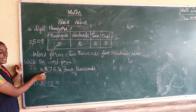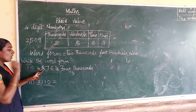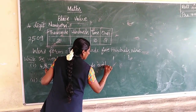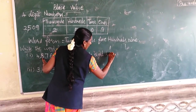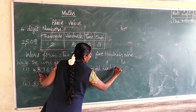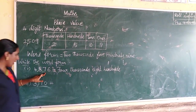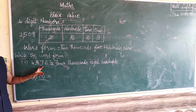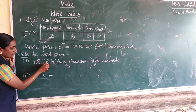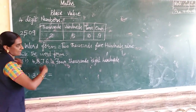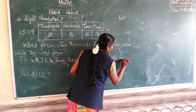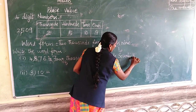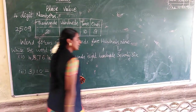Next, the 100s place. How many 100s? 8, so that is 800. Next, the 10s place: how many 10s? 7, so 7 × 10 = 70. And the 1s place is 6. So we have 4000 + 800 + 76.